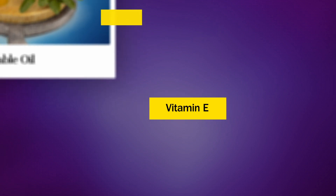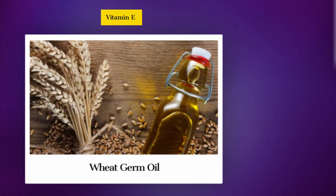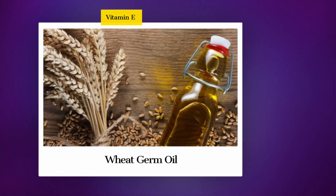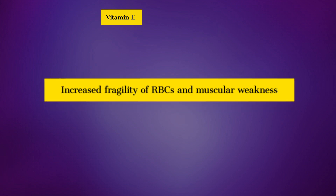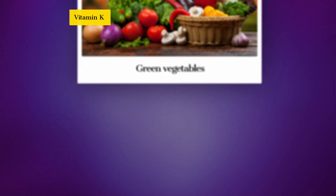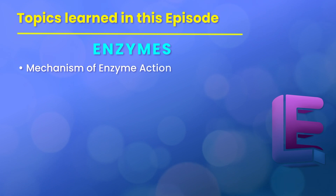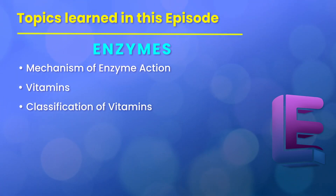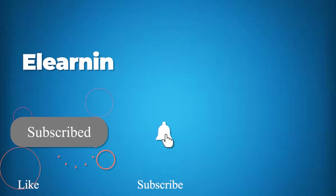Vitamin E: Sources — vegetable oils like sunflower oil, wheat germ oil, etc. Deficiency disease — increased fragility of RBCs and muscular weakness. Vitamin K: Sources — green leafy vegetables. Deficiency disease — increased blood clotting time.